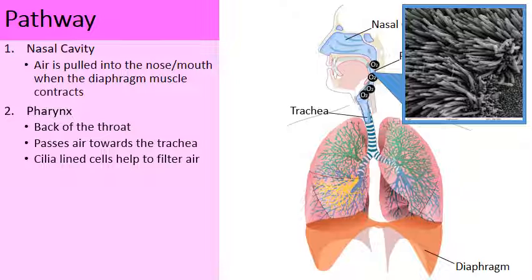The pharynx is lined with cells that possess little tiny microscopic hairs on them called cilia. The mucous membranes and the cilia work together so that allergens such as pollen grains or dust can get trapped in this sticky coating, preventing the irritant from ever reaching your lungs. It's a great way to filter the air that we breathe.